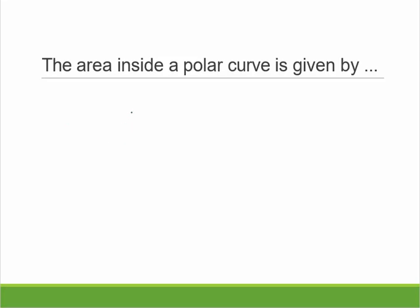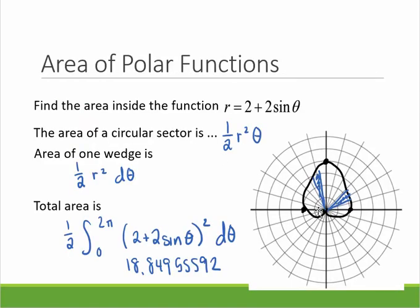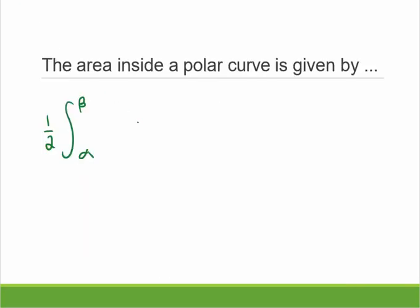So now in general, the area inside a polar curve is given by 1/2 integral from α₁ to α₂. So two different angles that are kind of bounding your area. In this case, we wanted this whole area. So that's why I went 0 to 2π. r² dθ.